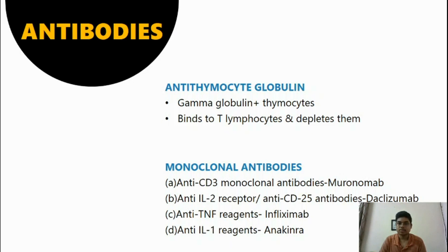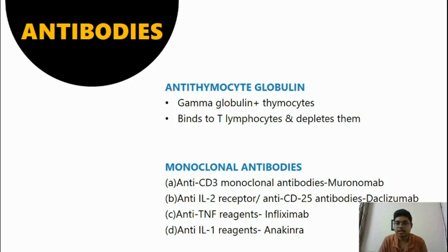Antithymocyte globulin is purified gamma globulin from the serum of rabbits immunized with human thymocytes. It binds to T lymphocytes and blocks them. Monoclonal antibodies are made up of identical immune cells which are all clones. Examples include: anti-CD3 monoclonal antibodies such as Muromonab; anti-IL-2 receptor or anti-CD25 antibodies such as Daclizumab; anti-TNF reagents such as Infliximab; and anti-IL-1 reagents such as Anakinra.